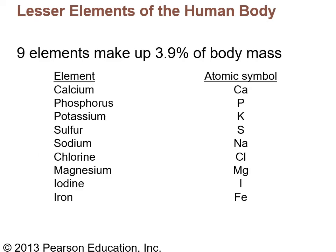There are some other elements in the human body that make up a smaller percentage — a little less than four percent. Calcium (symbol Ca) is found in bone. Phosphorus (P) is also found in bone. Potassium (symbol K) is an important electrolyte for electrical transmission in the body. Sulfur (S) makes bridges that help hold proteins in their three-dimensional shapes. Sodium (symbol Na) — Na comes from the Latin word natrium.